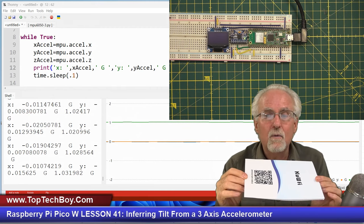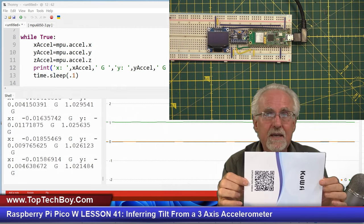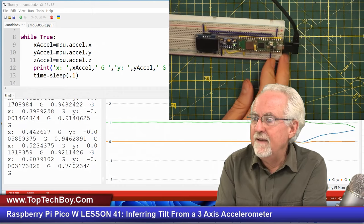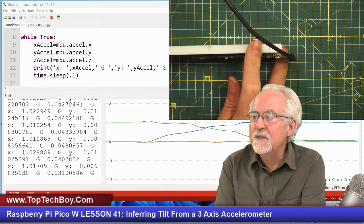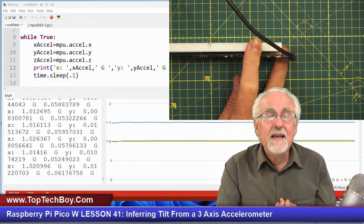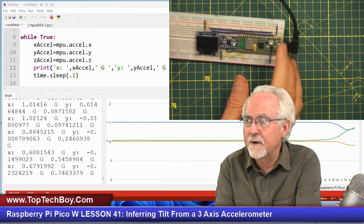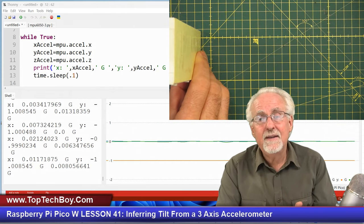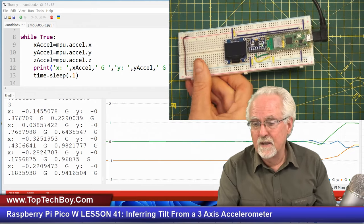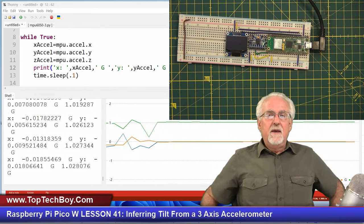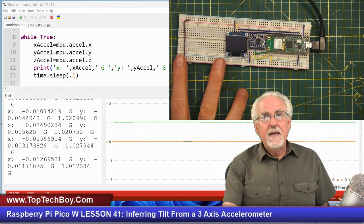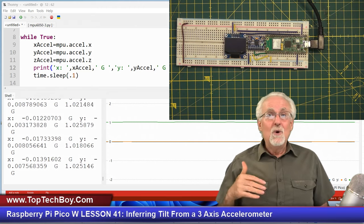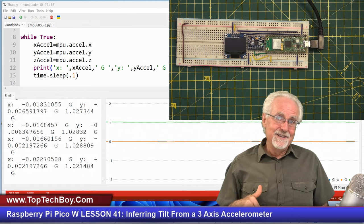But now what if I rotate it and I put z up like that? Now it doesn't have one g on it. And if I do that, you see now the one g is acting on the x accelerometer. Or if I put it like this, now the one g is acting on the y accelerometer.